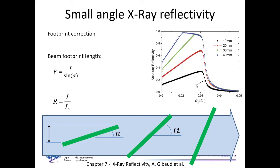One thing to keep in mind with reflectivity is that at grazing incidence angles, the footprint of your beam on the sample is stretched — longer the more grazing the angles are. At some point there may be beam spill above and below the sample. If you consider reflectivity as the ratio of outgoing to incoming intensity, you have to account for this beam spill — that's called the footprint correction. You know your beam height and sample length and determine at which angle beam spill occurs, adding a multiplicative factor proportional to that.